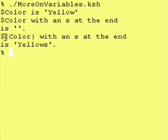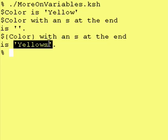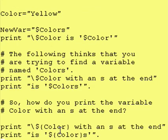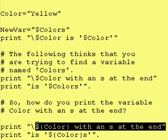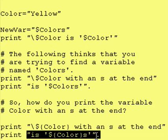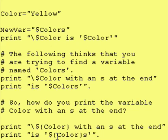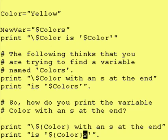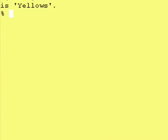And then in our third statement, we said color with the open curly brace and closed curly brace with an s at the end, and it came out to yellows. As you can see, it did in fact take the variable color and do the substitution — color had a value of yellow, got substituted right here, and then we printed the s afterward, which gave us yellows.